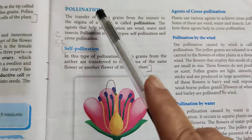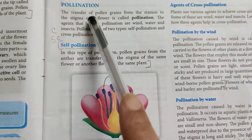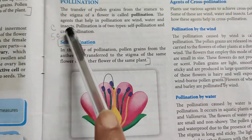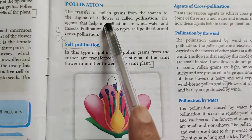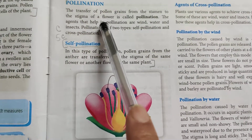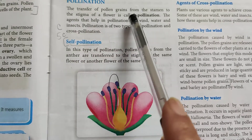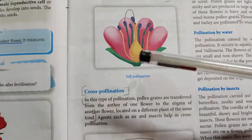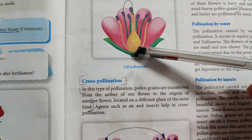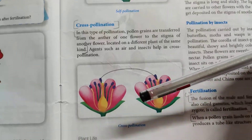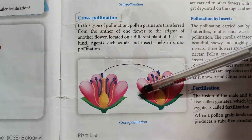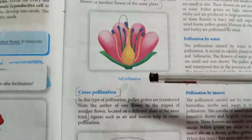Now we come to pollination. The transfer of pollen grains from stamen to the stigma of a flower is called pollination. Pollination is of two types: self-pollination and cross-pollination.